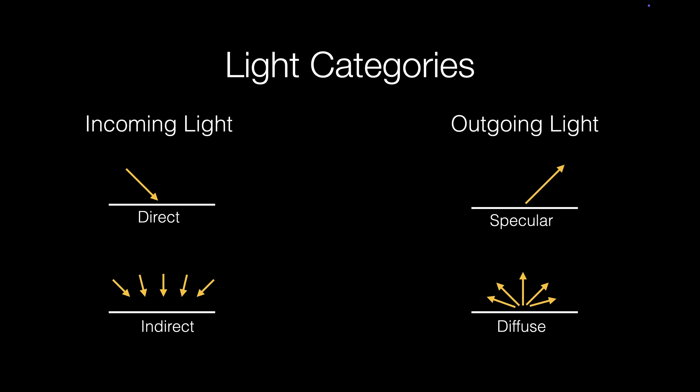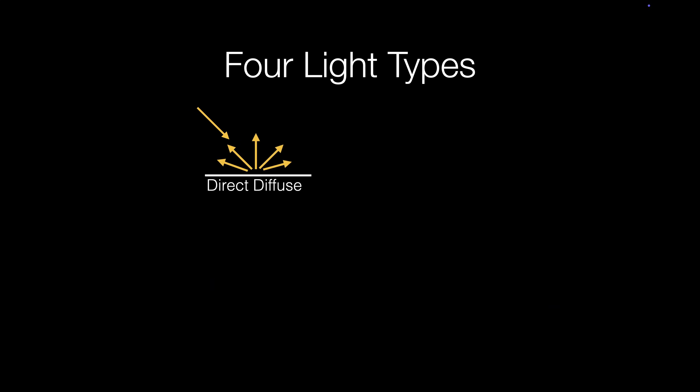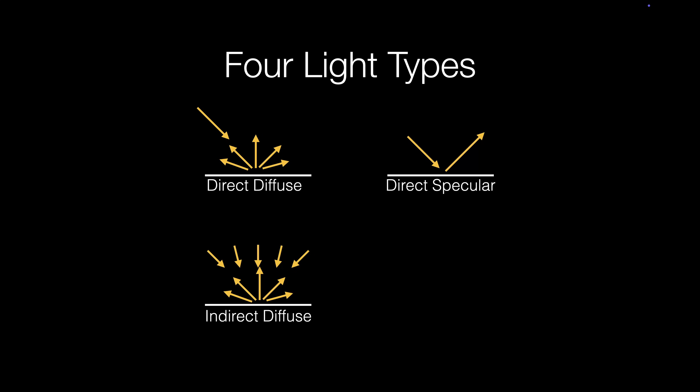If we combine the incoming and outgoing light behaviors, we end up with four main light-surface interactions. Direct diffuse is light coming directly from the source and getting scattered in all directions. Direct specular is light coming directly from the source and being reflected in a focused direction. Indirect diffuse is light coming from the ambient environment and getting scattered by the surface. Indirect specular is ambient light coming from the environment and being reflected in a focused direction. These four distinctions don't really exist in reality, but in computer graphics it's convenient to break things down this way so we can develop methods for handling each of these cases.